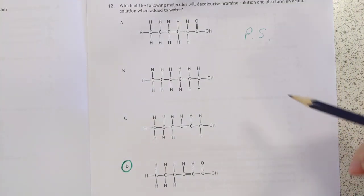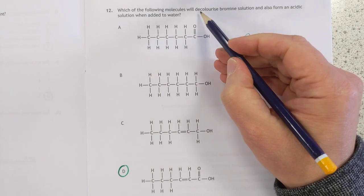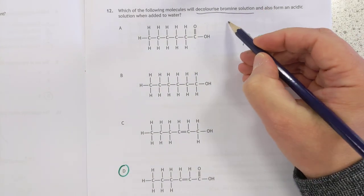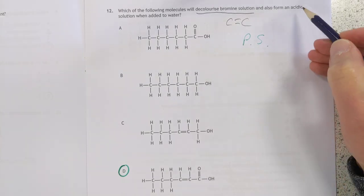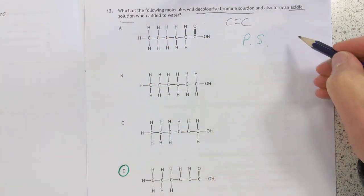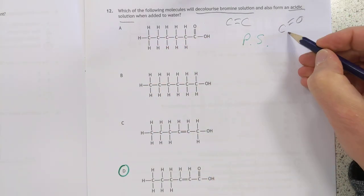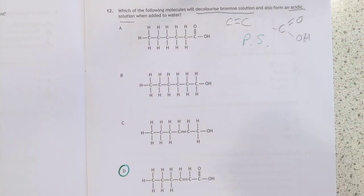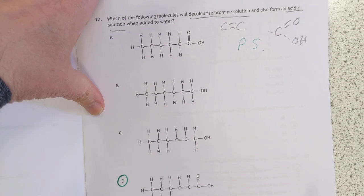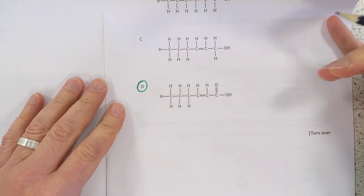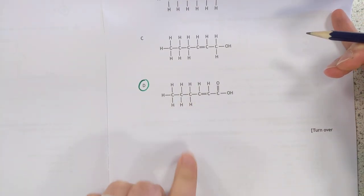Number 12. Sort of problem solving. Bit tricky, this one. Decolourises bromine solution. So we're looking for a carbon-carbon double bond. But is also acidic. So we're also looking for the carboxylic acid group. So two functional groups in one.